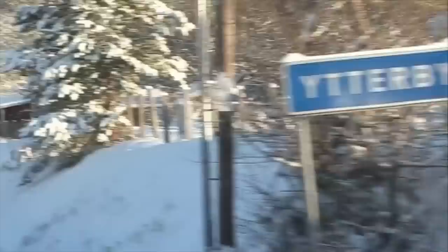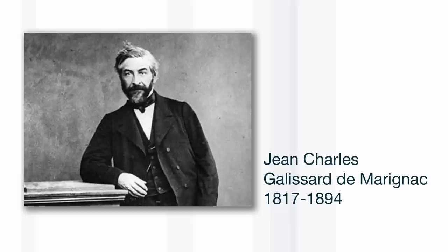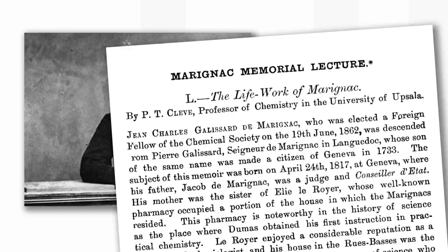The mineral that ytterbium was discovered in was found in Sweden, but it was actually isolated in Switzerland, in Geneva, by the Swiss chemist Jean-Charles Galissard de Marignac. When he died, there was a memorial lecture in his honor by the Chemical Society, the forerunner of the Royal Society of Chemistry.